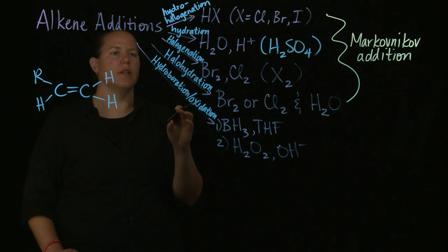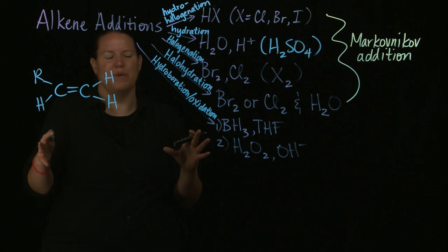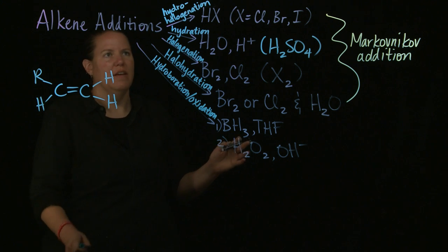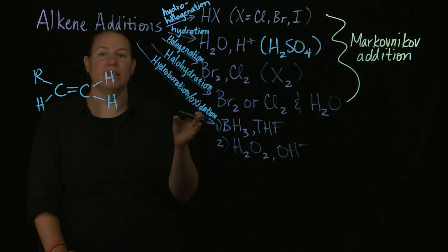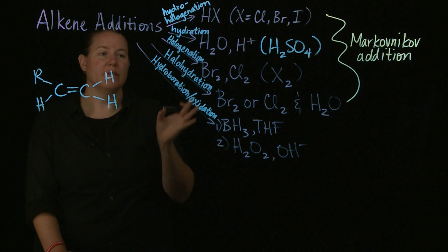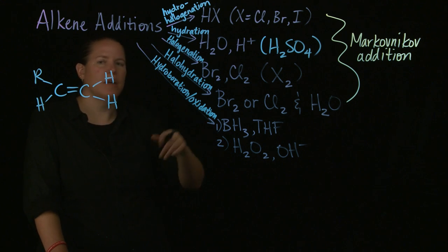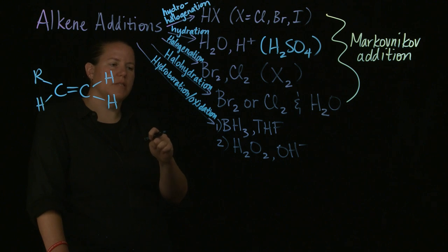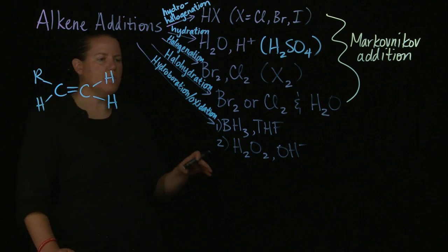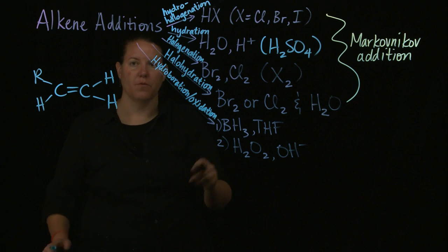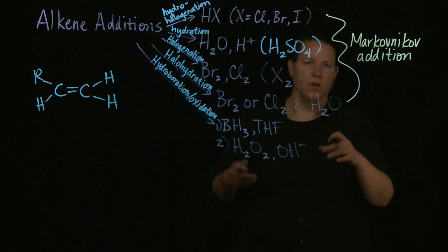A halohydration, the names are just flipped but it tells you what's attacking first. In a hydrohalogenation, the H adds first, which is why it comes first in the name. In halohydration, the Br or Cl adds first. So that is why it has preference in the name. The hydration part would be OH from the water.